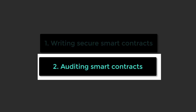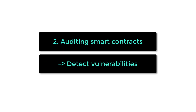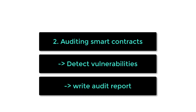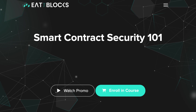After that, the last step is to learn smart contract auditing. There are two parts to this: first, you need to learn how to detect smart contract vulnerabilities — you can do this manually or by using security tools like Mythril. Finally, you need to learn how to write the report of a smart contract audit. For this, you can take some inspiration from existing smart contract audits.